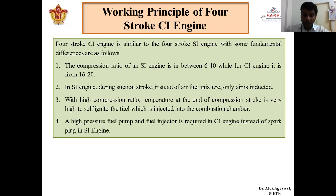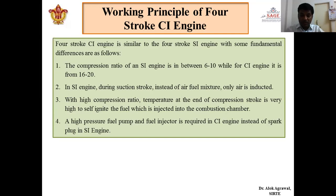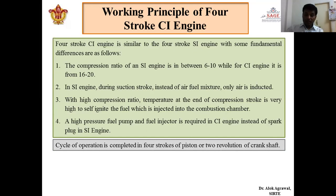A very high pressure fuel pump and fuel injector are required in the CI engine instead of a spark plug as in the SI engine. The spark plug in the SI engine is replaced by a fuel pump that injects fuel at high pressure into the combustion chamber via a fuel injector. The rest of the operation is very similar to the spark ignition engine — the cycle is completed in four strokes, or two revolutions of the crankshaft.